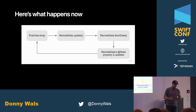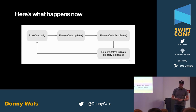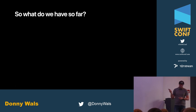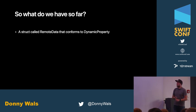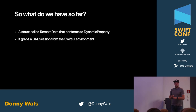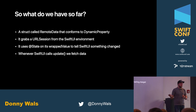Here's what happens now: PostView is about to evaluate its body. The update function is called. We go ahead and fetch data. The @State property is updated. Then PostView's body can be evaluated again and we can show our data. So what do we have at this point? A struct called RemoteData conforming to DynamicProperty — it's part of SwiftUI's view environment, it takes a URLSession from the SwiftUI environment, and it uses @State on its wrappedValue to tell SwiftUI that something changed.